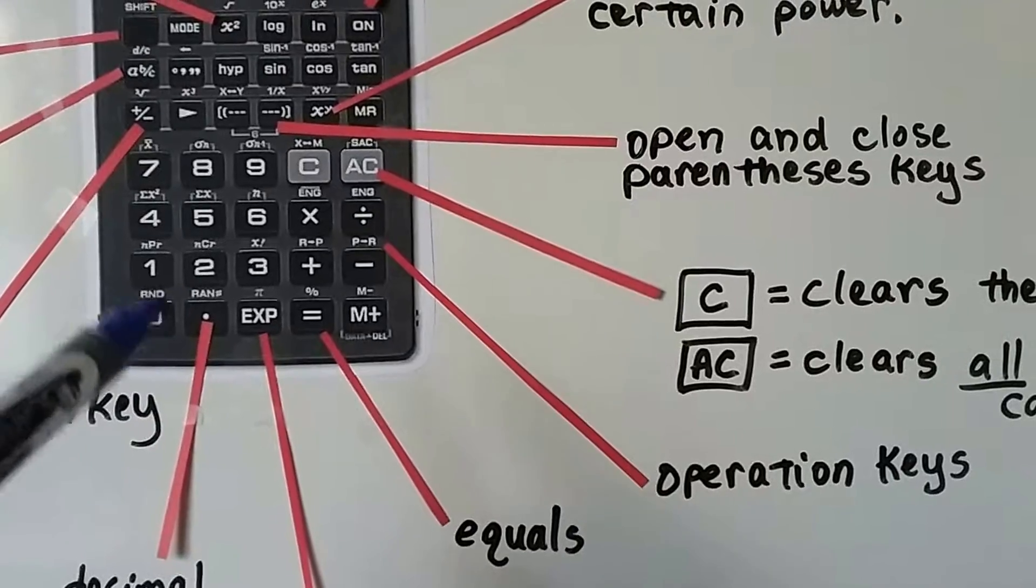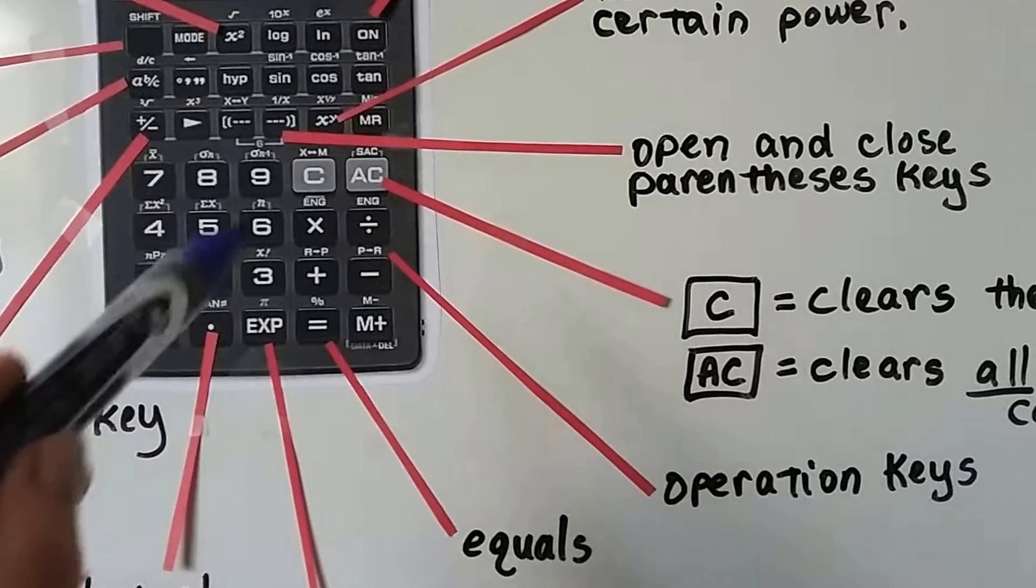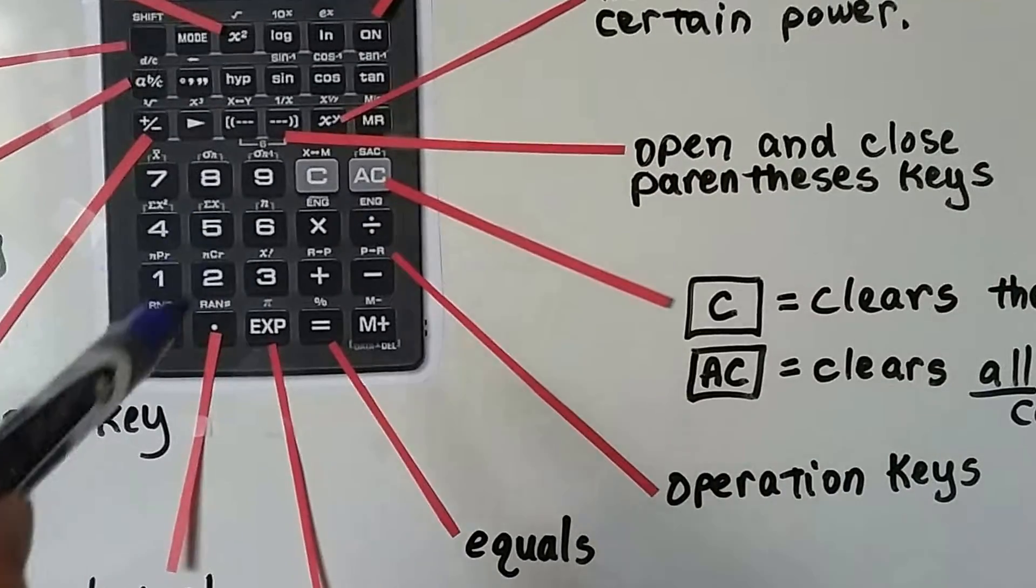And we can see we have 0, 1, 2, 3, 4, 5, 6, 7, 8, 9. We can see here's our number keys right here.